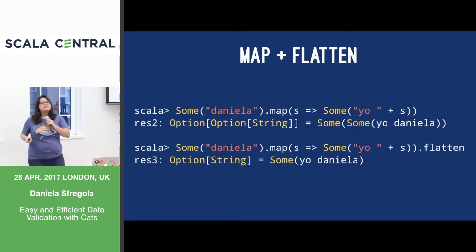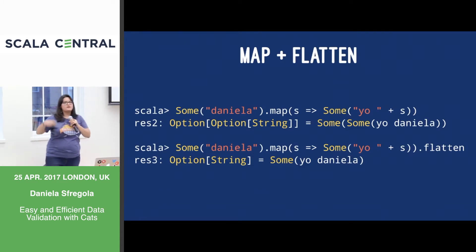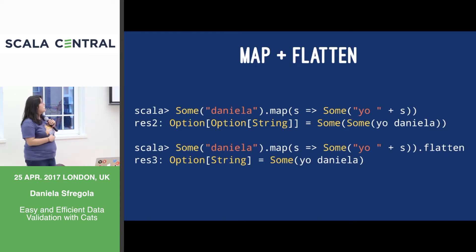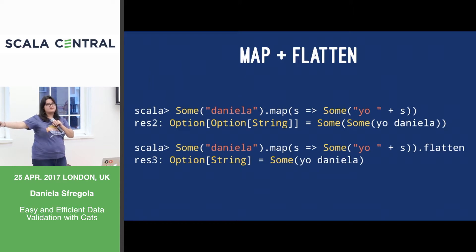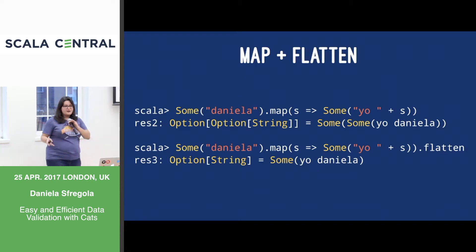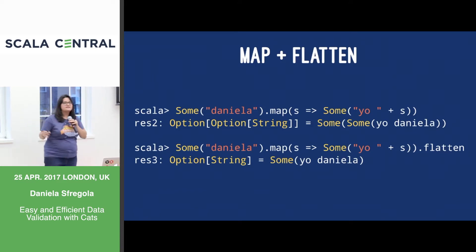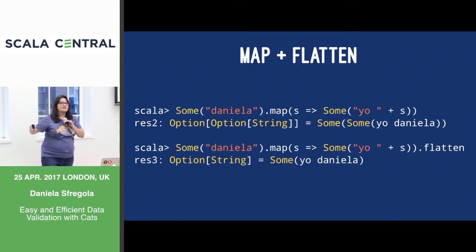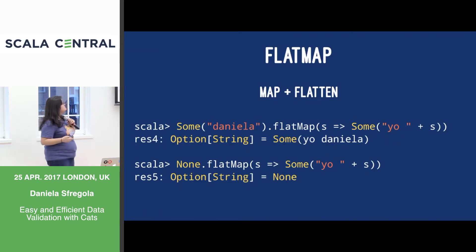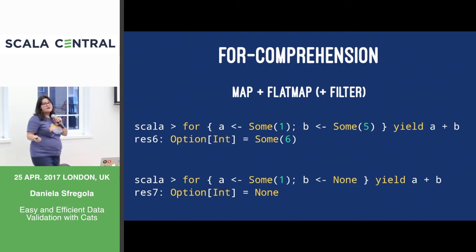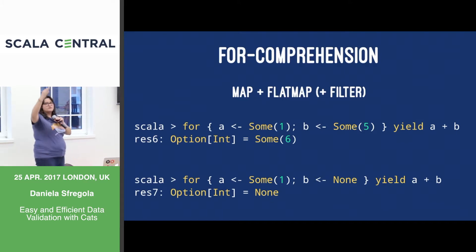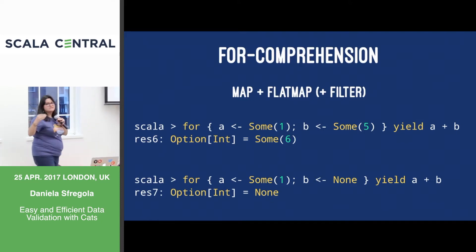But what if my function returns a container itself — like for example a function that returns an Option? What will happen is that I will have a Some of a Some of my string. That's pretty stupid — we don't want a value that maybe, maybe contains a value. So there is a function called flatten that basically throws away one container, so instead of having a maybe-maybe-a-value, you have a maybe-a-value. And this is so common they have combined map and flatten into something called flatMap. It's literally just the same thing: a map and then a flatten to throw away one container.